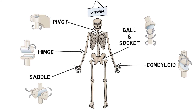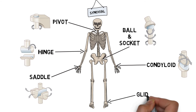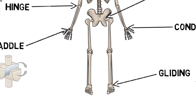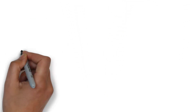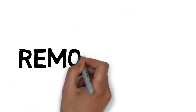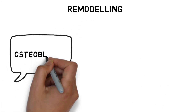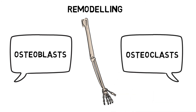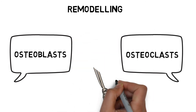Gliding joints have no axes of rotation, and can only glide forward and back, or side-to-side, such as in our ankles. The body is in a constant process of making new bone. This is called remodelling. Osteoblasts are cells that lay down new bone tissue. Osteoclasts are cells that break down and remove old bone.